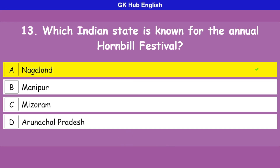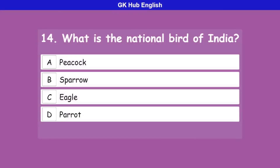Question 14: What is the national bird of India? Option A is Peacock, option B is Sparrow, option C is Eagle, option D is Parrot. Correct answer is Peacock.